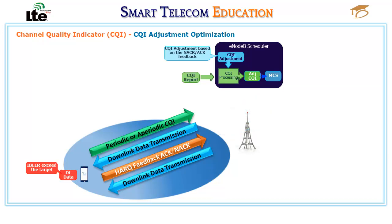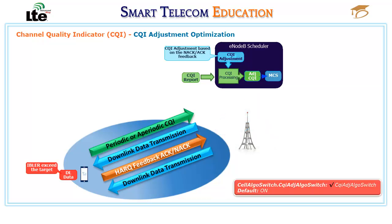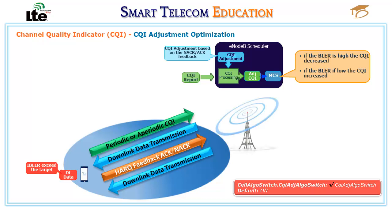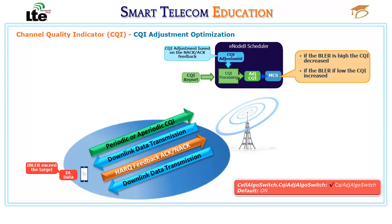CQI adjustment is controlled by the CQI adjustment ALGO switch option of the cell ALGO switch parameter. If this option is selected, the E-NodeB selects an MCS based on the adjusted CQI. If the selected MCS requires better channel quality than is available, the block error rate for data packets increases, and the E-NodeB decreases the CQI based on feedback from the UE. If the current channel quality is better than that required by the selected MCS, the BLER for data packets decreases, and the E-NodeB reacts by increasing the CQI based on feedback from the UE.